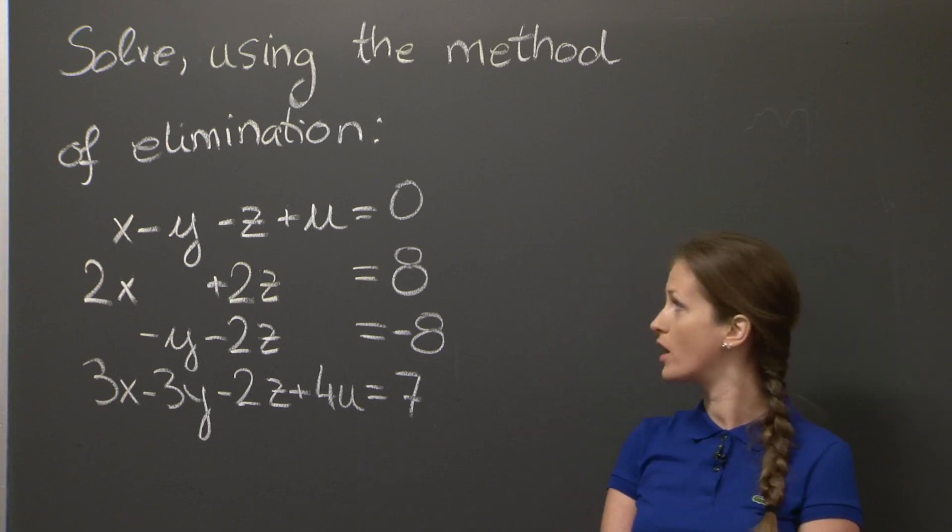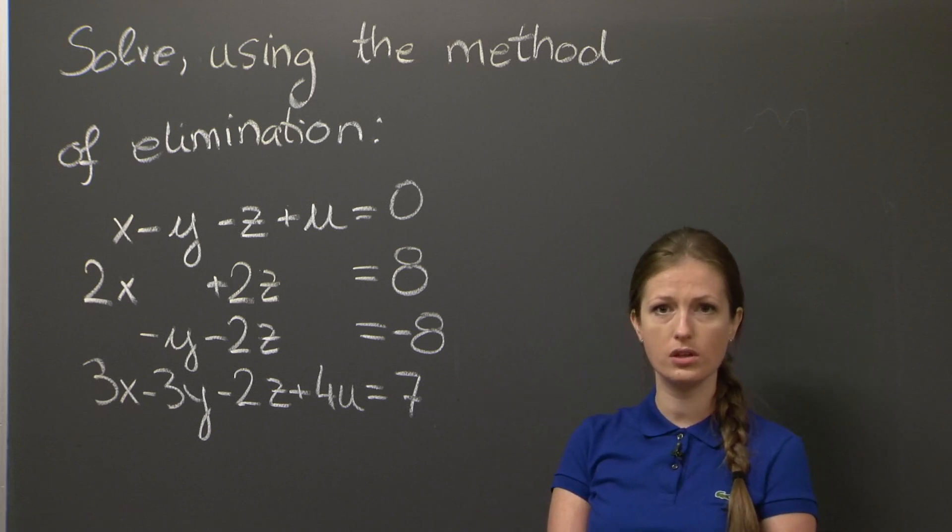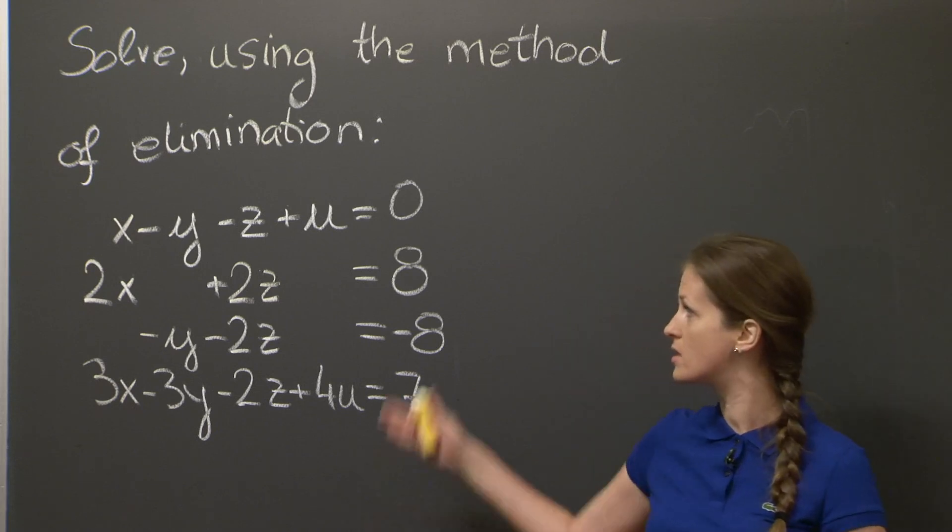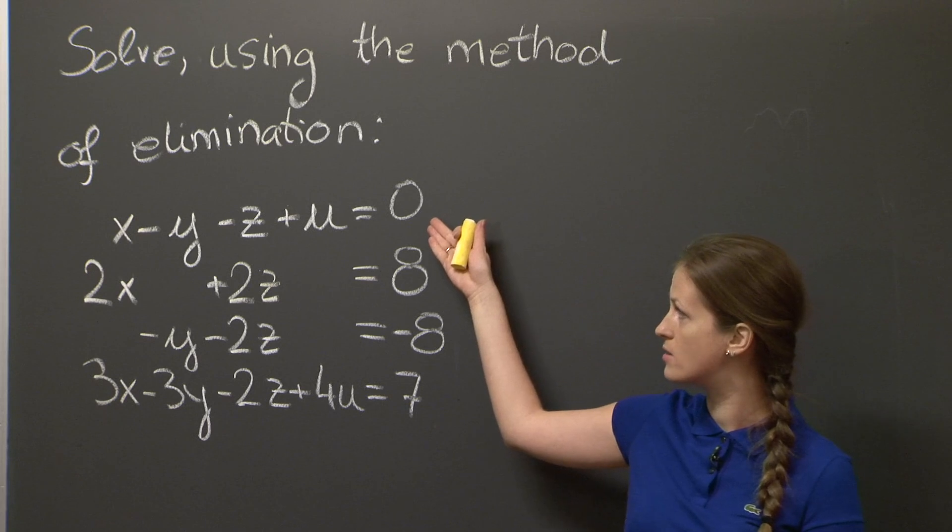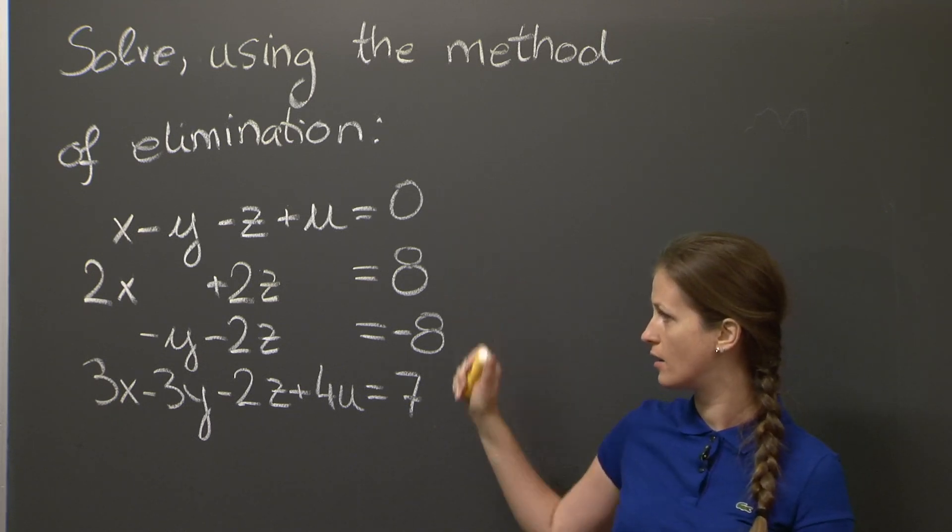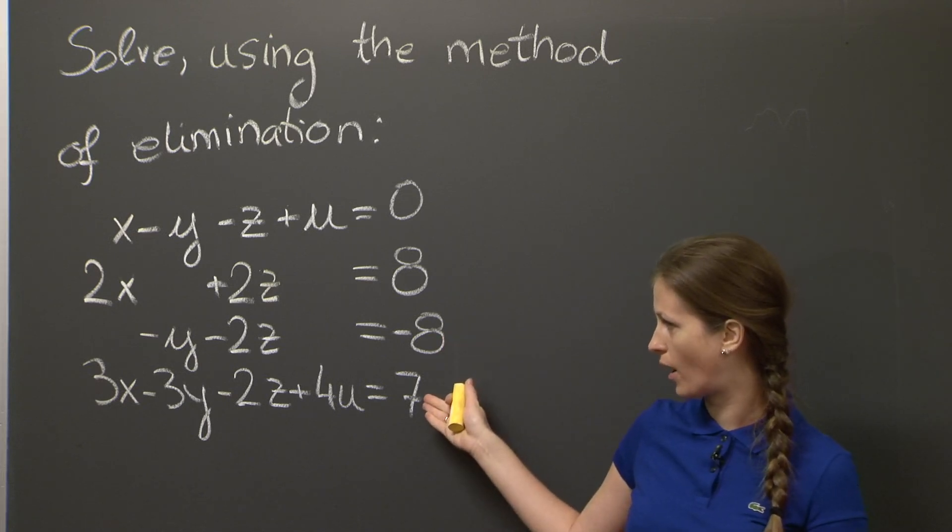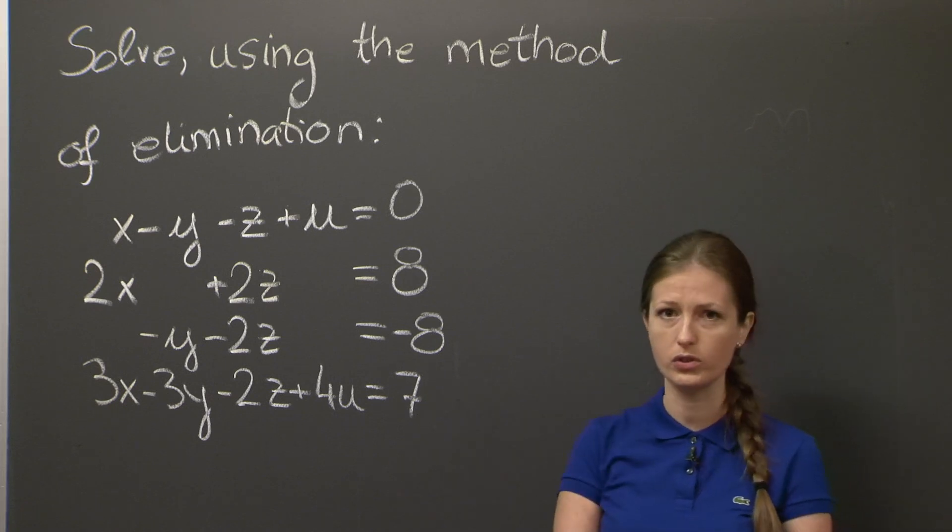Today's problem is straightforward: solve the following linear system with four equations and four unknowns using the method of elimination. The system is x minus y minus z plus u equals 0, 2x plus 2z equals 8, minus y minus 2z equals minus 8, and 3x minus 3y minus 2z plus 4u equals 7.